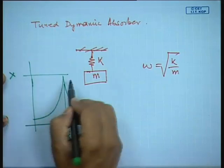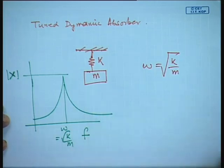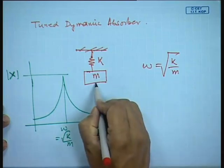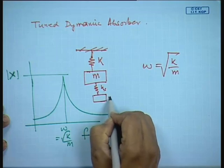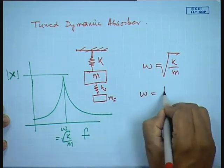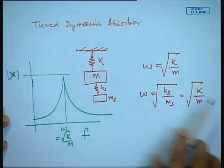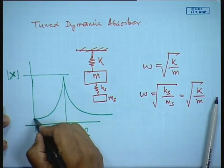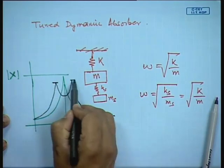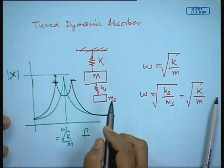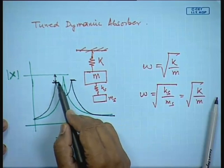What I can do is attach to this system another system (a secondary mass m_s with stiffness k_s) tuned so that its natural frequency ω_s = √(k_s/m_s) equals the driving frequency. This combined system now has two natural frequencies and the response will look different: there will be a natural frequency shift, and most importantly the amplitude of vibration of the primary mass is reduced.